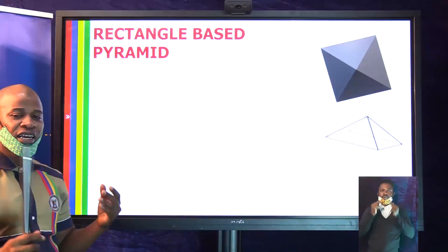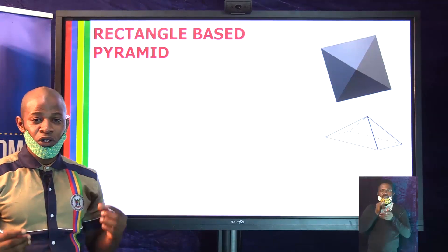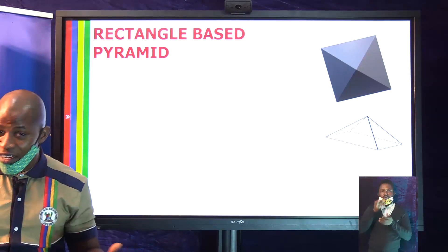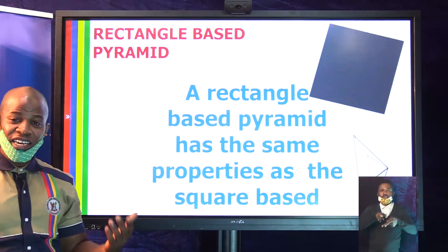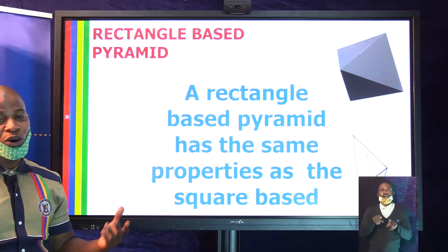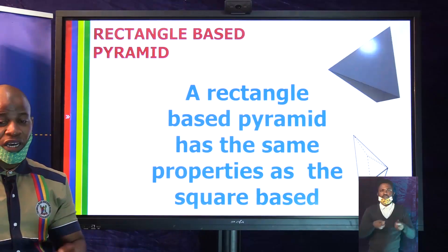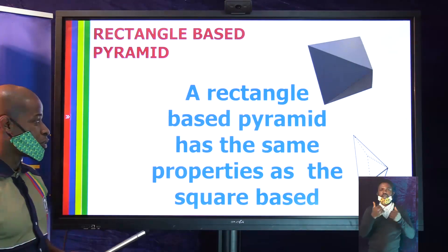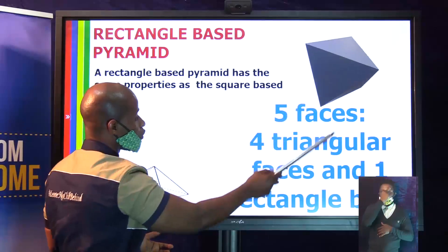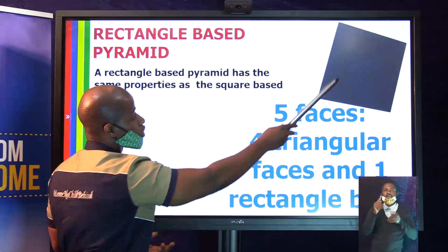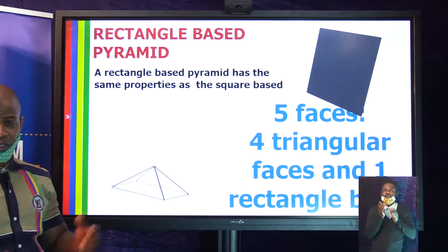The next one to consider is a rectangle-based pyramid. You should already know by the name that the base will be a rectangle. The properties are actually the same as those of a square-based pyramid — the only difference is the shape at the bottom. It has five faces: four triangular faces and one rectangular base, making five altogether. It also has eight edges.